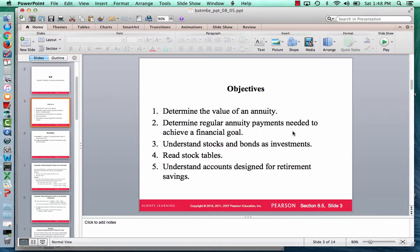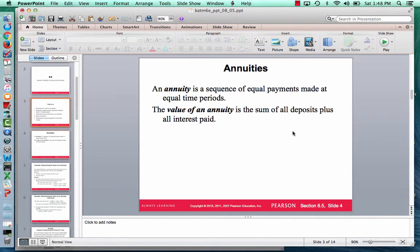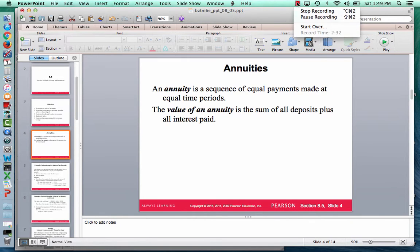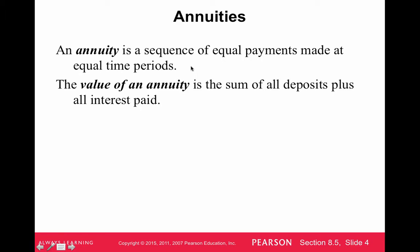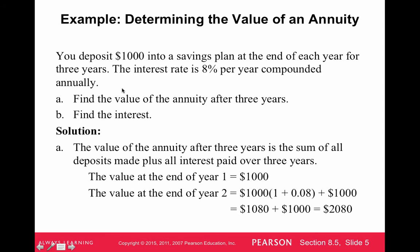So let's look at what an annuity is. An annuity is a sequence of equal payments made at equal time periods. The value of an annuity is the sum of all the deposits plus all the interest paid. The main thing to remember is that an annuity is a savings plan where you make regularly scheduled deposits that are always the same, and the value of that is the future value, which we label A.